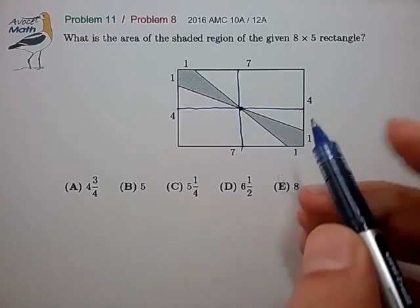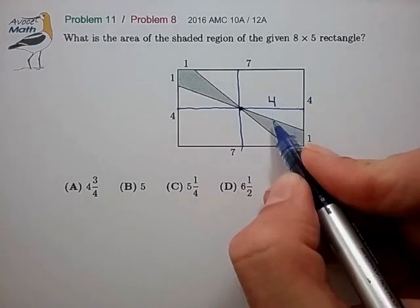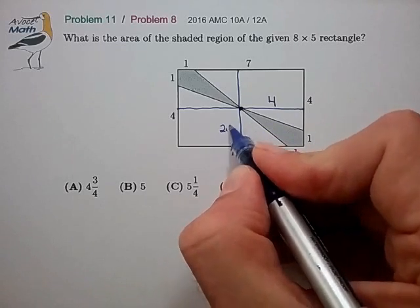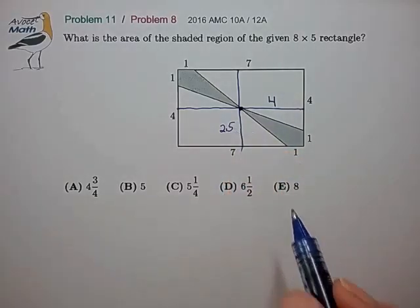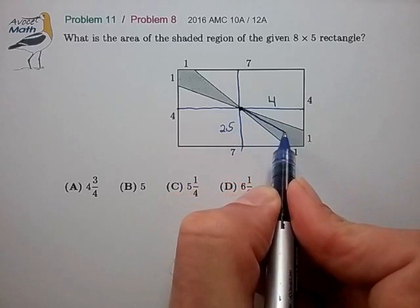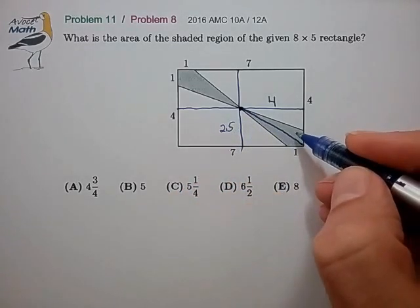Let's see, we notice that this smaller rectangle is of length 4 and its height is 2.5. And we can break up this shaded region now into two triangles, and those are now pretty easy to compute.